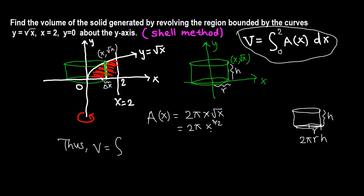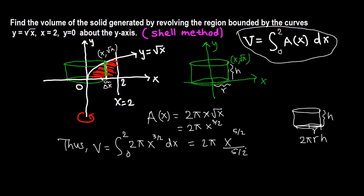The volume is given by the integral from 0 to 2 of 2π x^(3/2) dx. Pulling 2π outside as a constant, we integrate x^(3/2) using the power rule: x^(3/2 + 1) divided by (3/2 + 1), which gives x^(5/2) divided by (5/2). We evaluate this from 0 to 2.